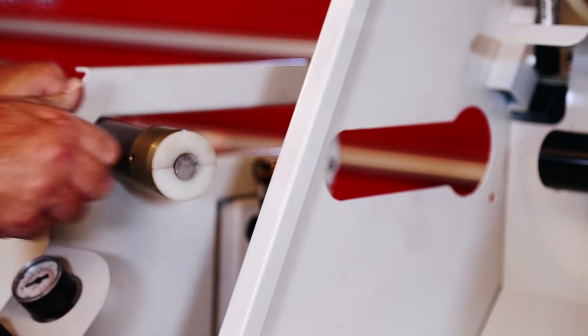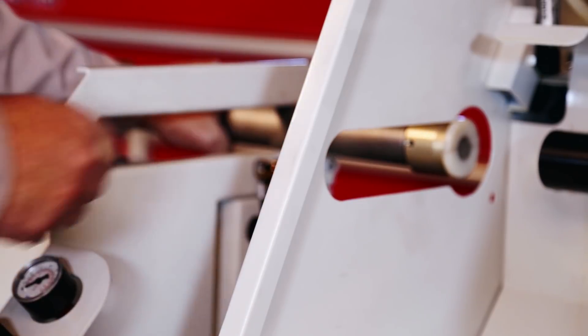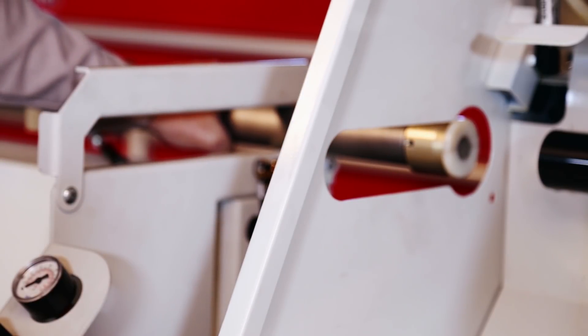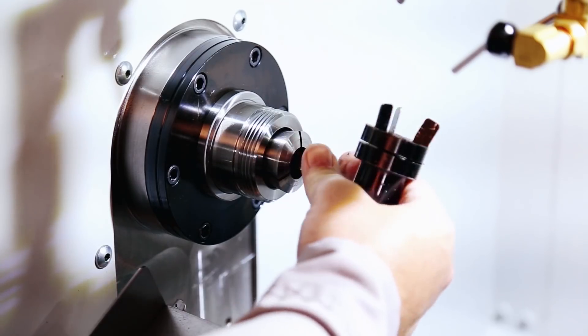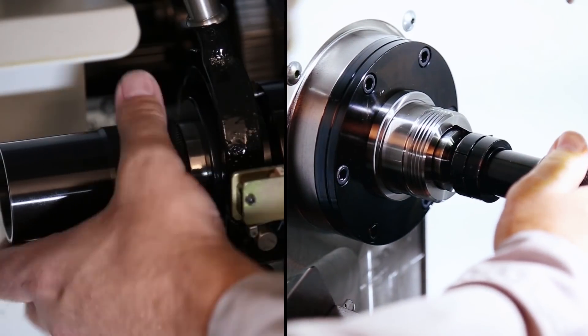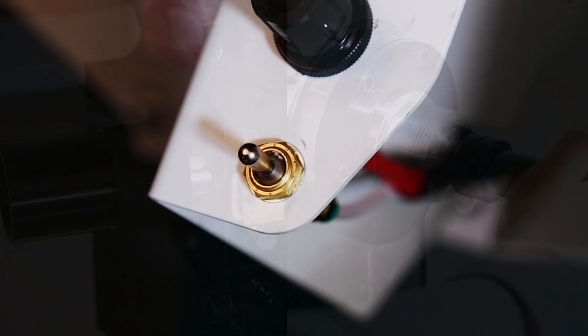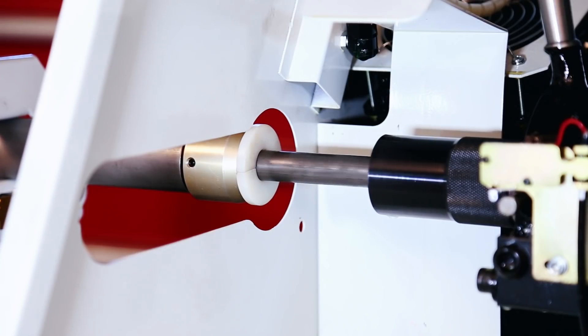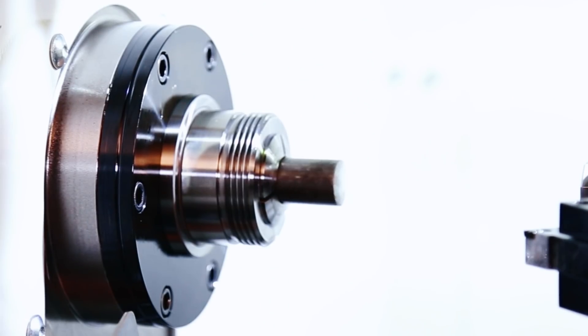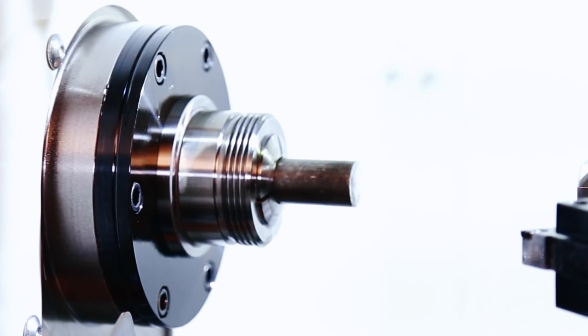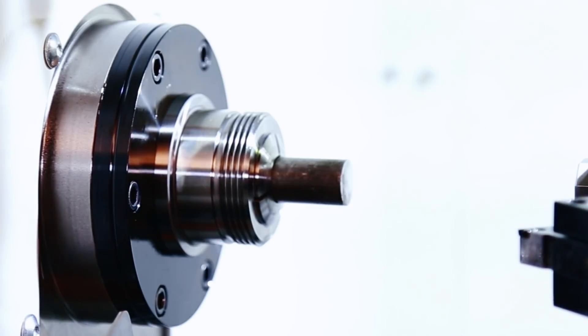After loading the support collars, we just push the stock flush with those collars and return the bar push tube to the run position. At this point, I'm going to load up the proper 5C collet for our stock and then come back over here to our manual feed switch and feed the bar in most of the way by pushing our switch to the right. I'll feed it by hand for those last few inches as the stock enters that 5C collet.